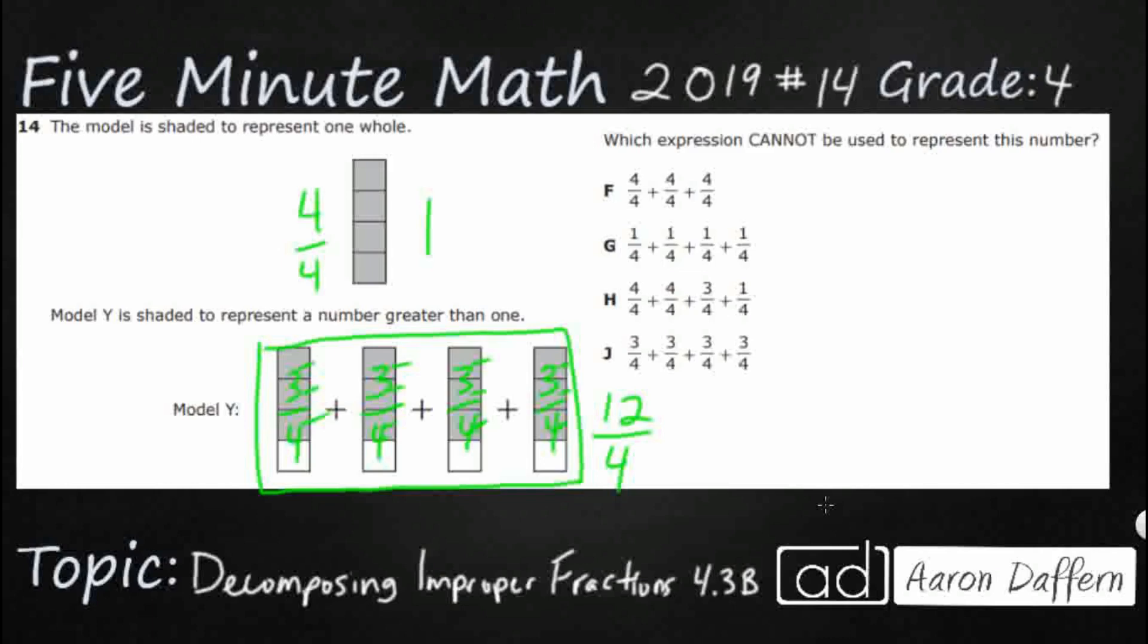Now what we need to do is find the expression that cannot be used to represent this number, which means three of these actually work. So let's just start with F here. I'm just going to draw my fourths. We'll just pretend that they're even.